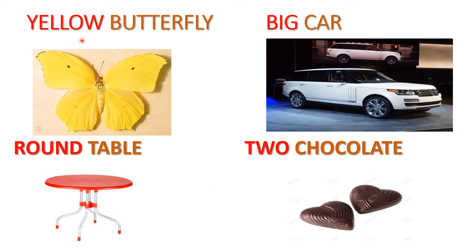Here, yellow tells us the color of the butterfly. Then two chocolates — two tells us about the number of chocolates. Two is the number.